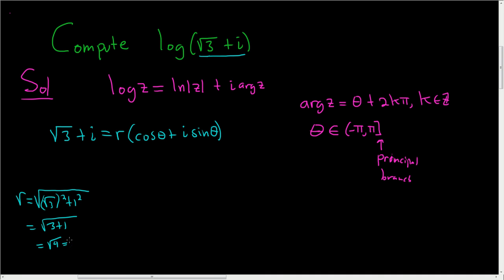So we get 2. So this is equal to 2 parentheses cosine theta plus i sine theta.